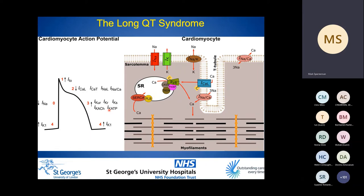In LQT3, higher heart rates lead to a buildup of intracellular sodium that inhibits the late sodium current due to a reduced electrochemical gradient for sodium to travel inward. Higher heart rate also leads to reverse mode of the sodium-calcium exchanger, producing outward current, and IKs accumulates at higher heart rates. Taken together, this means arrhythmias are more likely during slower heart rates and increased vagal tone in LQT type 3.